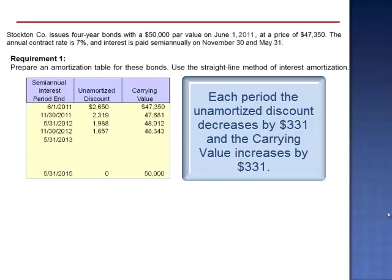May 31, 2013, $1,657 minus $331 is $1,326. The carrying value increases by $331. November 30, 2013, $1,326 minus $331 is $995, bringing the carrying value up to $49,005. May 31, 2014, $995 minus $331 is $664. The carrying value is $49,336.